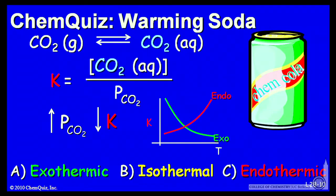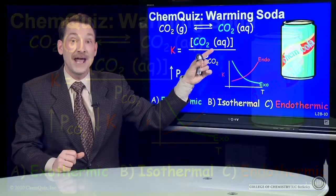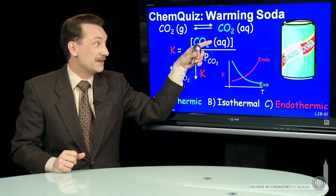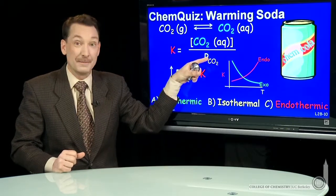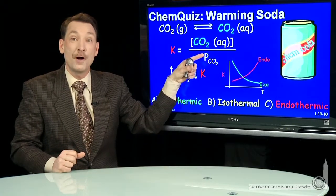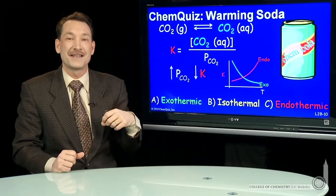Remember, for an exothermic reaction, K decreases. So K decreases with temperature. A smaller K means the top gets smaller, the bottom gets bigger. More pressure of carbon dioxide gas at that temperature.